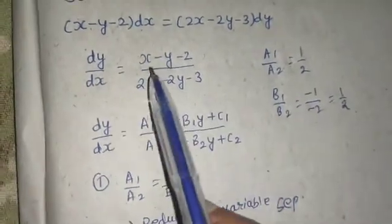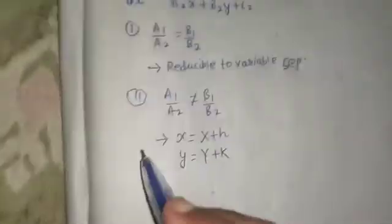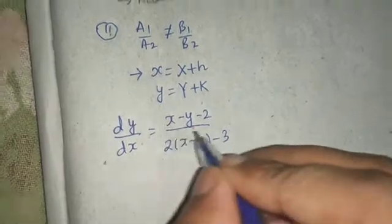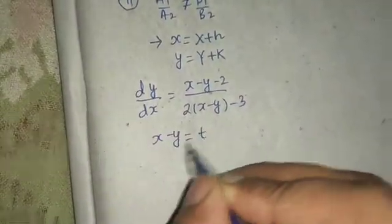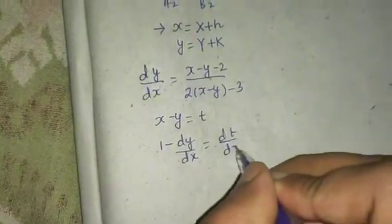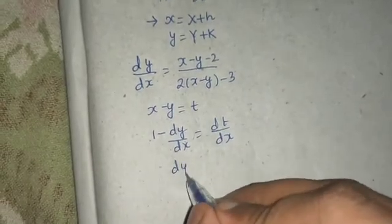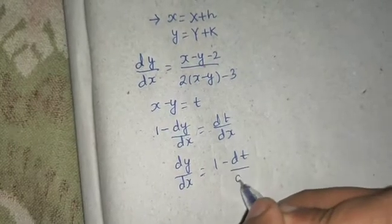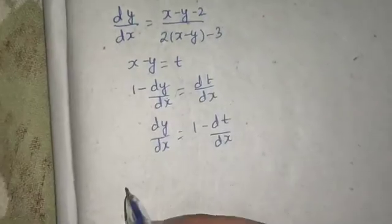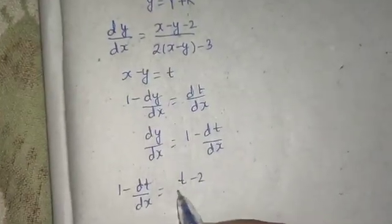Coming back to the question: this belongs to Case 1. As you can see, x minus y is common in both numerator and denominator. So dy/dx equals x minus y minus 2 in the numerator, and in the denominator we take 2 common, giving 2 times (x minus y minus 3/2). Now let t equal x minus y. Differentiating both sides with respect to x gives 1 minus dy/dx equals dt/dx, so dy/dx equals 1 minus dt/dx. Replacing dy/dx, we get 1 minus dt/dx equals (t minus 2) divided by (2t minus 3).